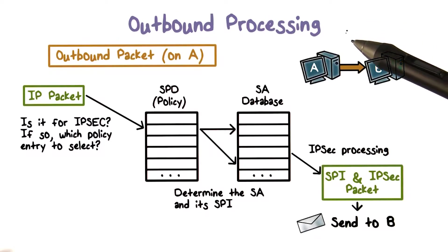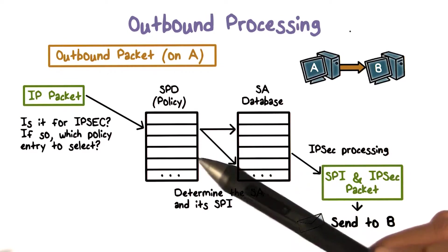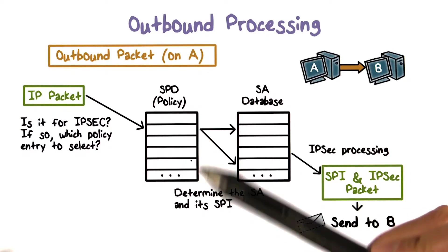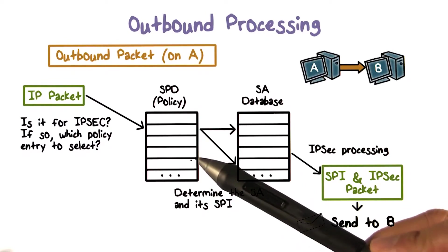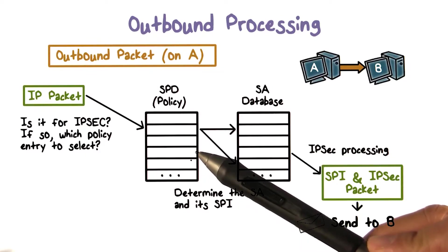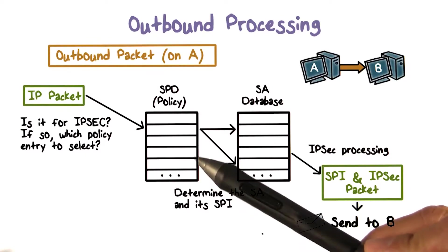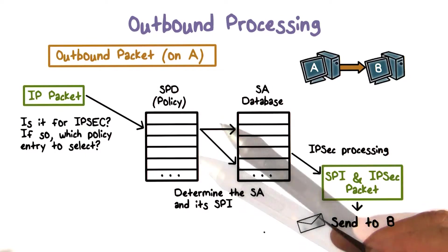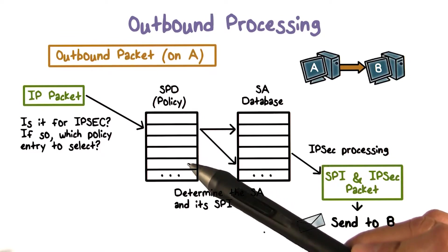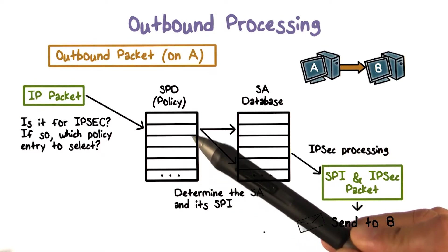Here's an illustration of the processing of outgoing IPSec traffic. First, the SPD is looked up to see if the traffic — for example, HTTP traffic from A to B — needs to be protected. That is, whether the traffic should undergo IPSec processing.